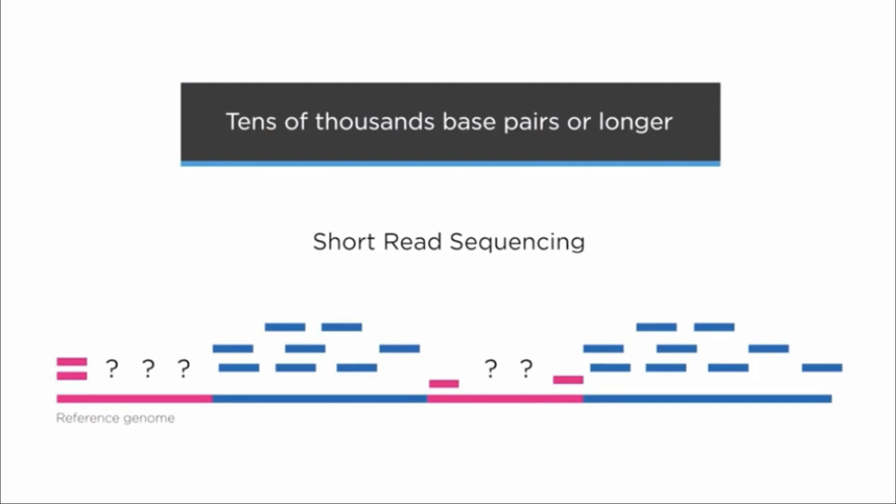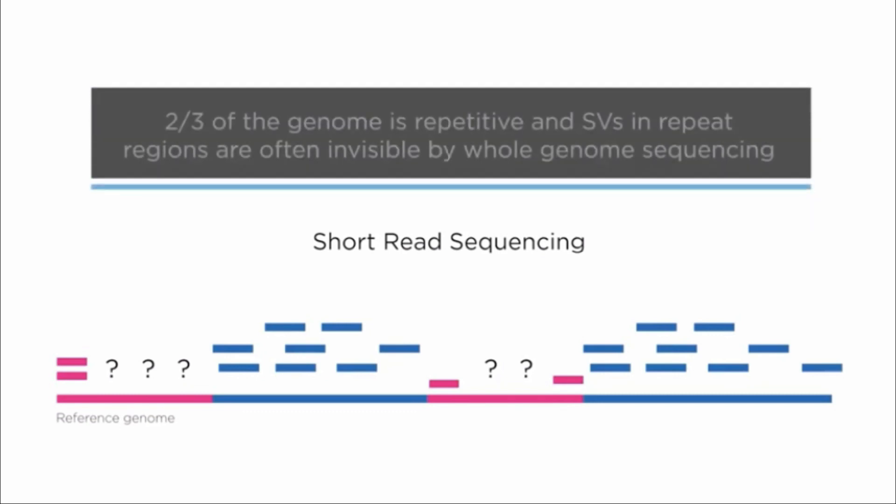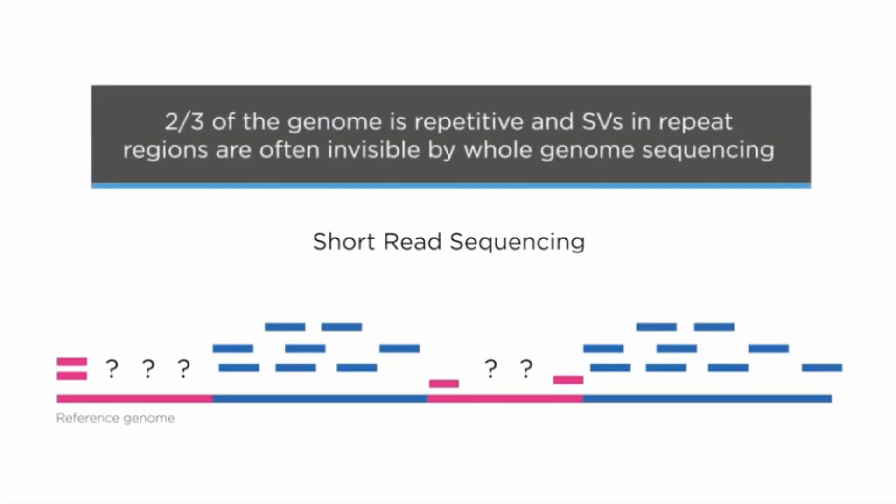It can characterize small variants, but structural variants are often tens of thousands of base pairs or longer, so short read sequencing is not an accurate way of calling them. What's more, two-thirds of the genome is repetitive, and structural variants in repeat regions are often invisible by whole genome sequencing.